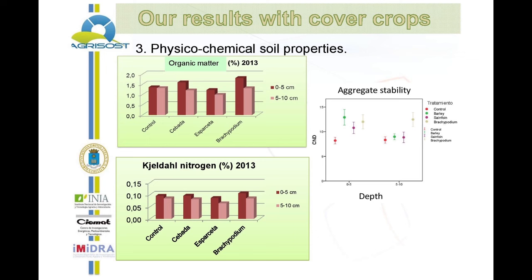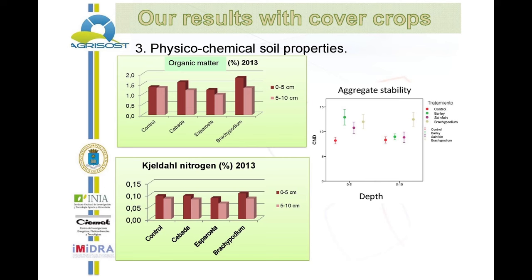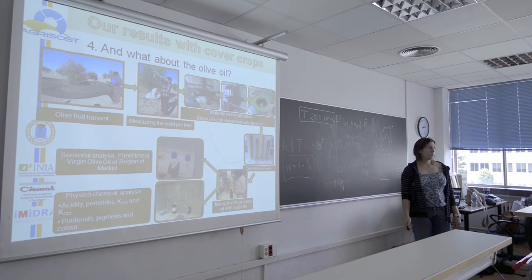With organic nitrogen, the results were quite similar. With aggregate stability at both depths, we found that aggregates — measured with the slaking test — are more stable with all the covers. But at 5 to 10 centimeters depth, only Brachypodium maintained good stability of the aggregates.